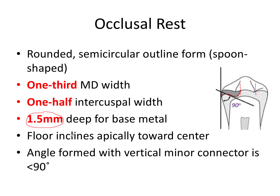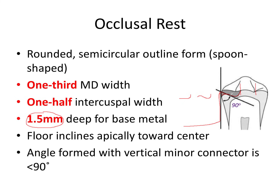Notice also how the floor of this tooth preparation inclines apically toward the center — it doesn't just go straight across, it dips down in a nice rounded outline form and then dips back up, so you have this apical incline toward the center as you move inwards. The angle formed with the vertical minor connector — which connects the major connector to the rest — is less than 90 degrees because of this apical inclination toward the center.